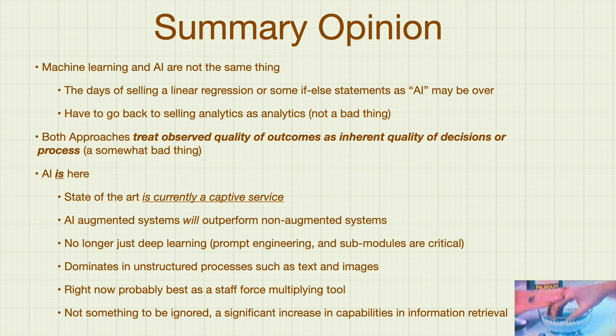AI is here, and it's much bigger than it's ever been — it's already disrupting a lot of jobs and industries. People that find ways to effectively use it are going to outperform those that do not. It is unclear how much different it is than state-of-the-art information retrieval, but it is kind of a stone soup: once you put a lot of things in it, it is a soup. In my summary opinion, machine learning and AI are not the same thing — machine learning used to market itself as AI. Both approaches treat observed quality of outcomes as inherent quality of the decision process, and that should be very disturbing to people interested in decision intelligence, decision science, or decision quality.